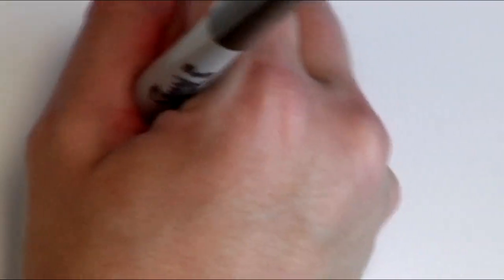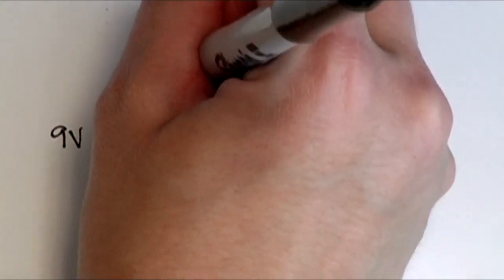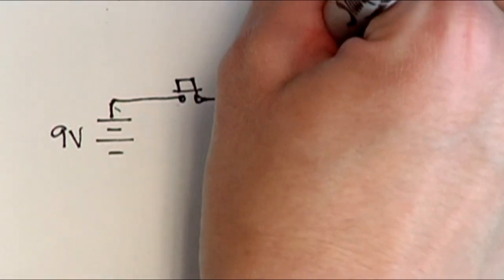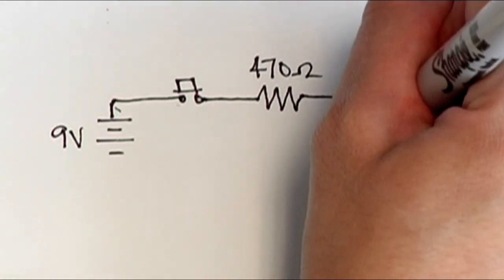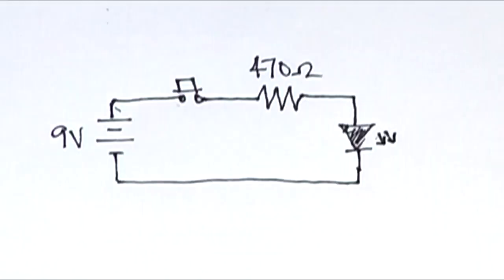Let's move on to something a bit more complicated and add a push button to control when the LED will come on. Again we have our 9 volt battery, but instead of the positive terminal being connected to the resistor, we have it connected to a push button. Now, no power will be provided to the LED unless the push button is pressed.